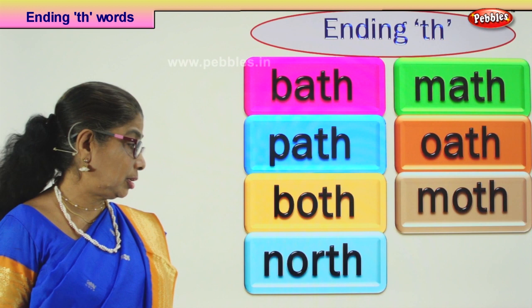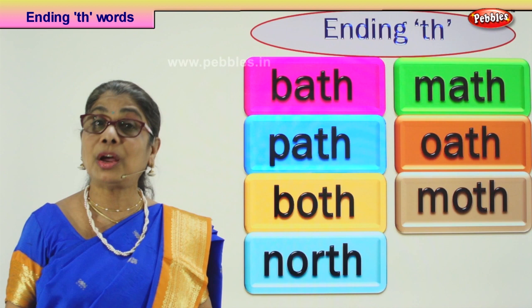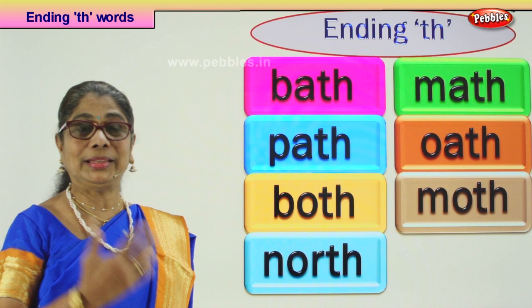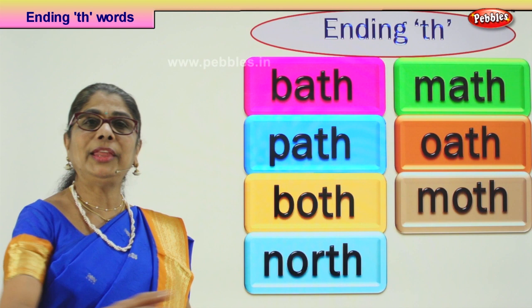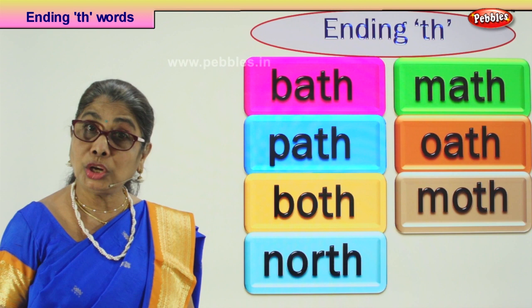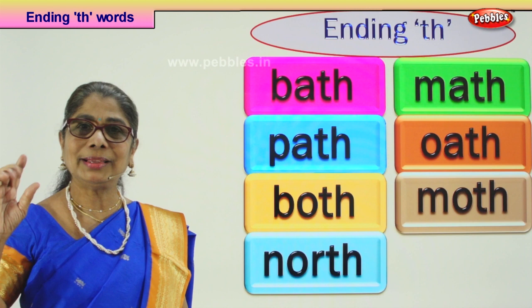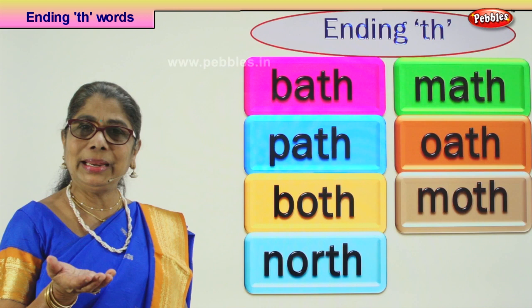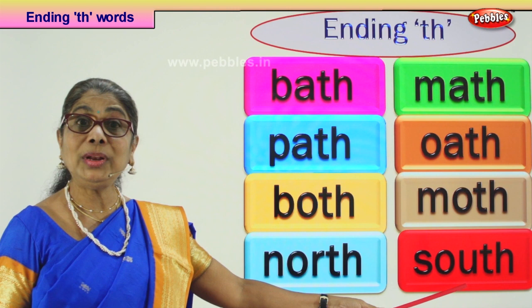Next word — north. North is a direction, one of the four directions: north, south, east, and west. If you look at a compass, there will be a pointer — anywhere you take it, it will point towards the north. Have you seen the pole star? If you go on the terrace at night and look up, you will see the pole star — it's in the north direction. A compass will help you know direction.